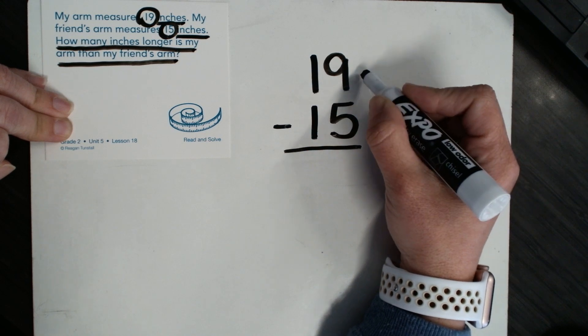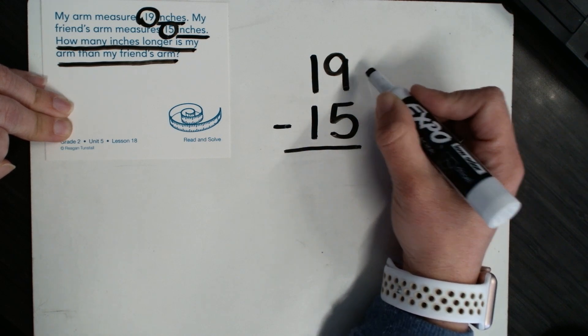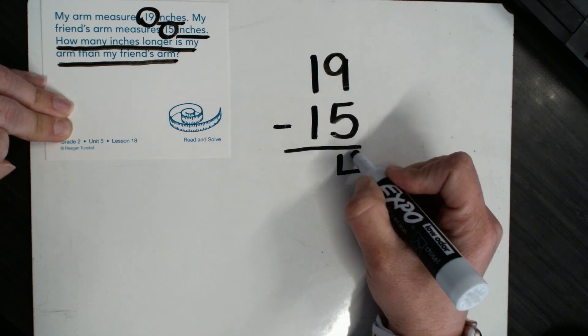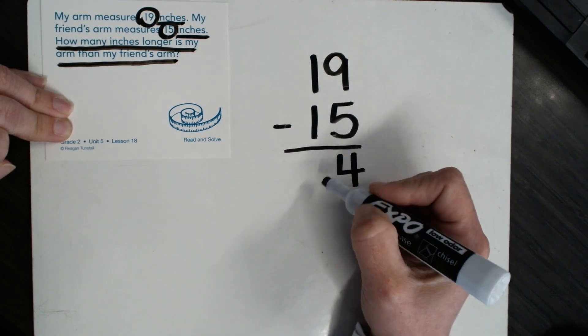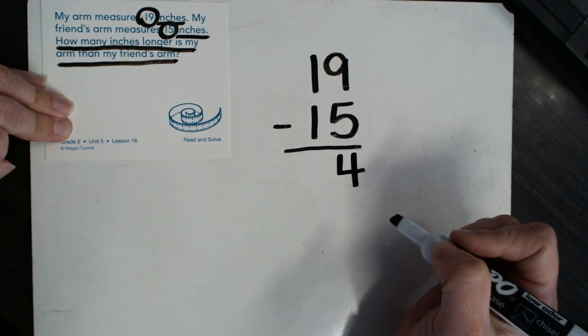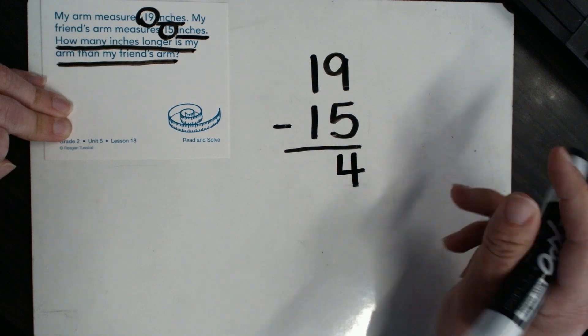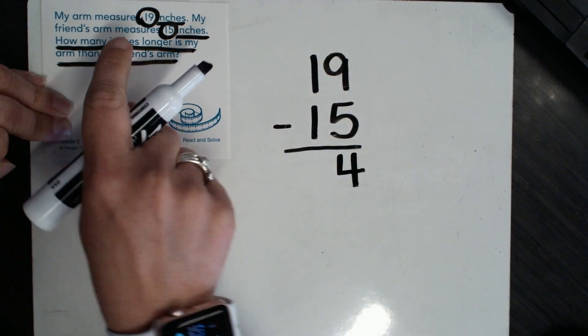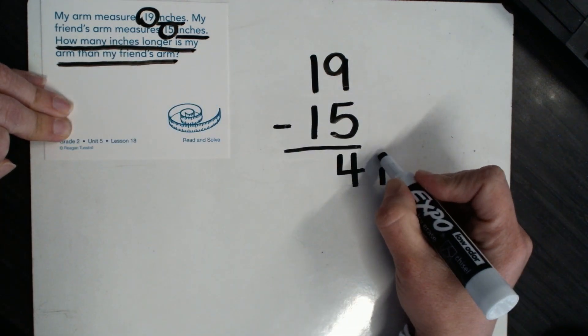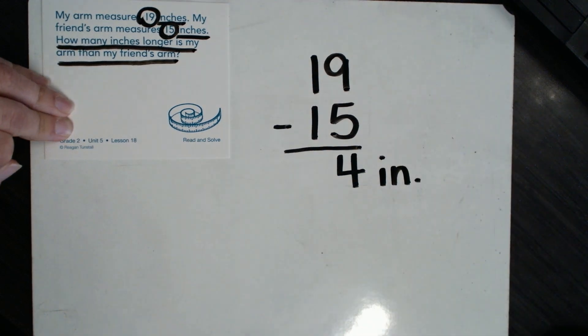So nine minus five, I have more on the top. No need to stop. Nine minus five is four, and one minus one is zero. So I'm just going to leave that part blank. Let's look back and see for our label, how many inches, four inches.